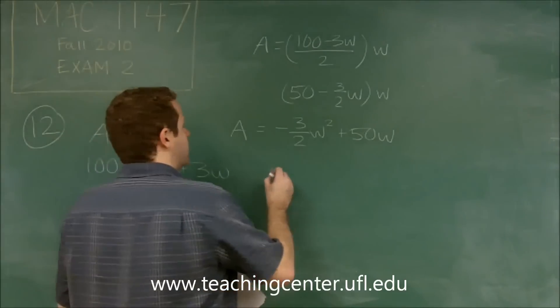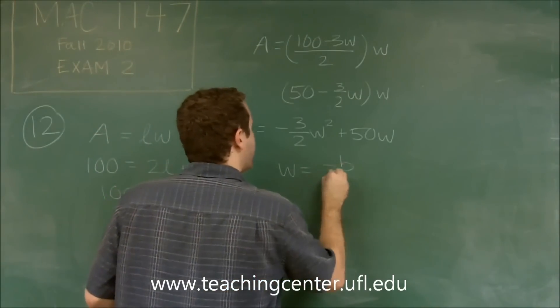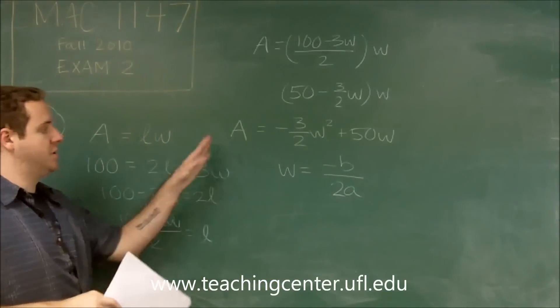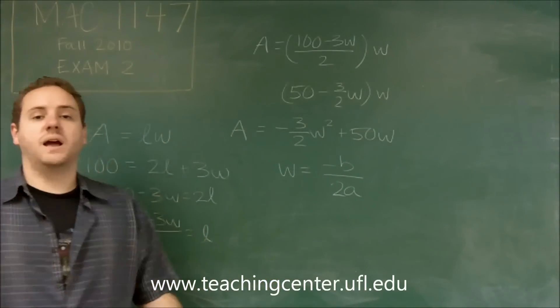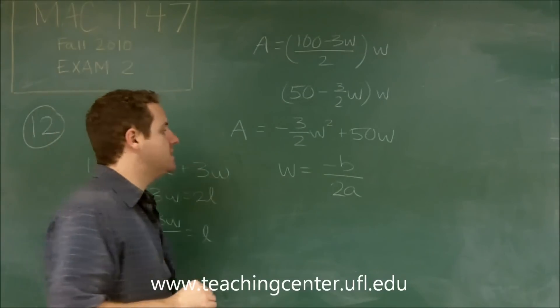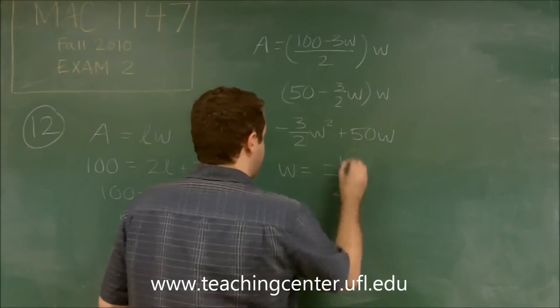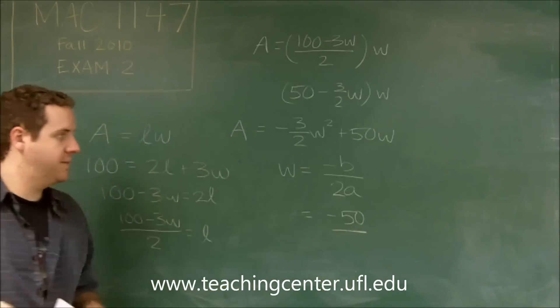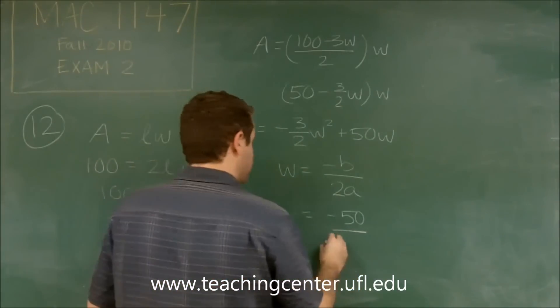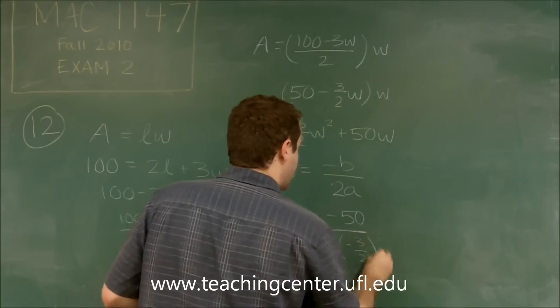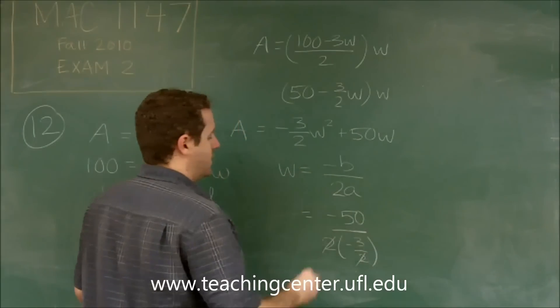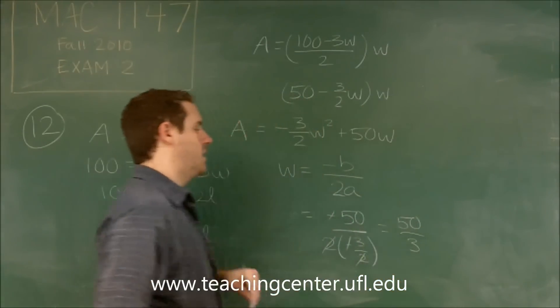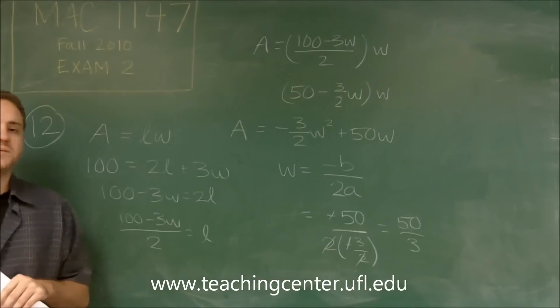Remember that using the vertex formula, in this case it gives you the W, it does not give you the area. So we're going to have to then plug it back in afterwards. But using the vertex formula, negative B is negative 50, A is negative 3 halves, so if we do 2 times negative 3 halves, you can see here the 2's cancel out, the negatives cancel out, and the W that would give you maximum area is 50 over 3.